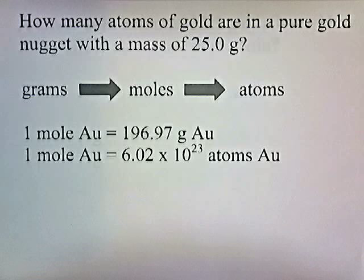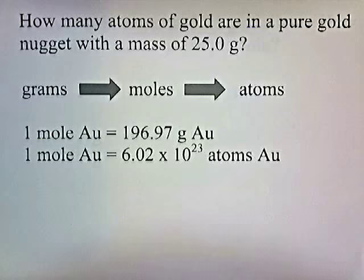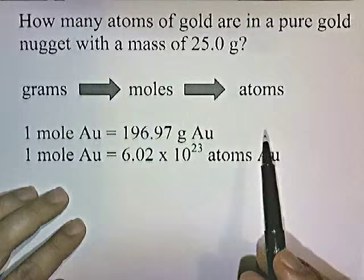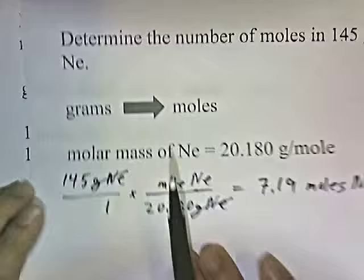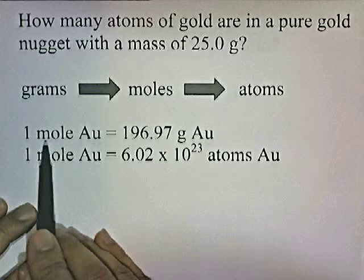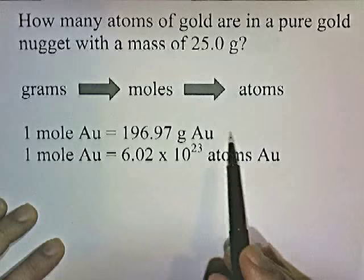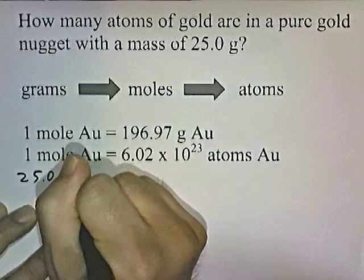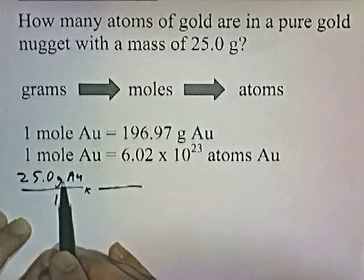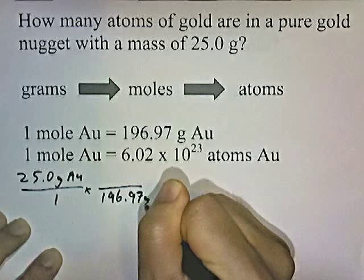How many atoms of gold are in a pure gold nugget with a mass of 25 grams? This problem's slightly different. They give us grams and we want atoms. We're going to convert grams into moles and then moles into atoms. To convert grams into moles, we need to know how much one mole of gold weighs — that's given on the periodic chart. And to convert moles into atoms, we need to know how many atoms make up a mole. So 25.0 grams of gold over 1: I'll put 196.97 grams of gold on the bottom and a mole of gold on top.